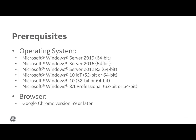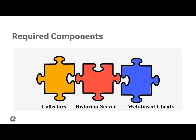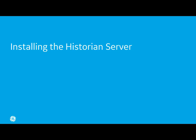You will need a machine with the Windows operating system and Google Chrome. The other requirements are installed automatically. To use Configuration Hub, you must install the historian server, the collectors, and web-based clients. You can install them in any order, on the same machine or on different machines. Let me first show you how to install the server.